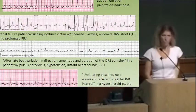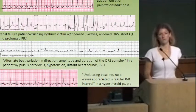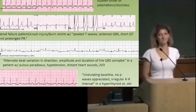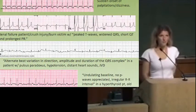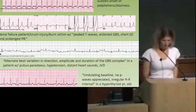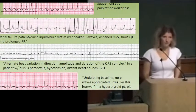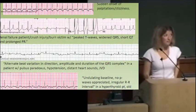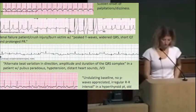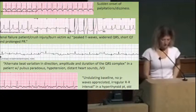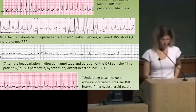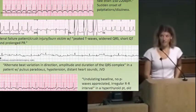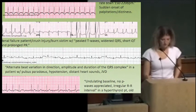Rate control or rhythm control — which is better for AFib? Neither has been proven better. So we do rate control — rhythm control hasn't been proven to be any better. We use drugs to control the rate of atrial fibrillation as first-line treatment. How do we do that? Beta blocker or digoxin — those are the mainstays.